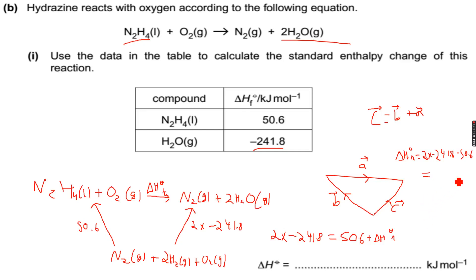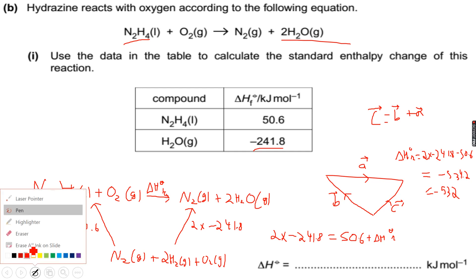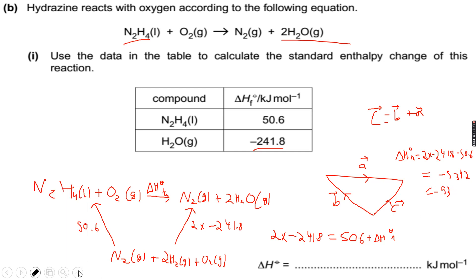2 into minus 2 for 1.8 minus 50.6, which is minus 534.2 kJ per mole. To 3 significant figures it will be minus 534 kJ per mole. This is the answer — minus 534 kJ per mole.